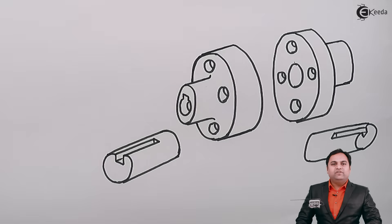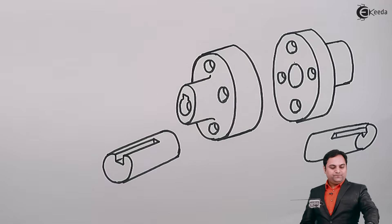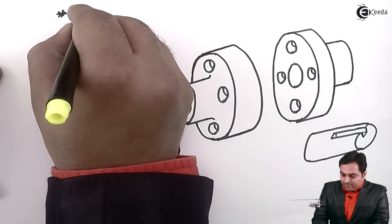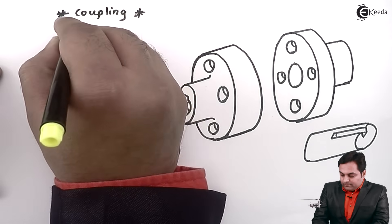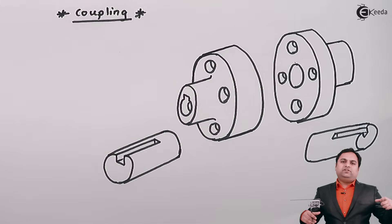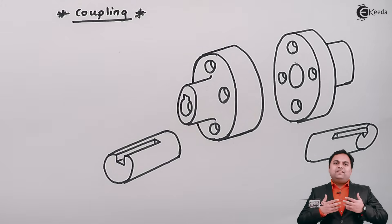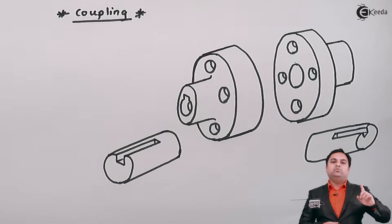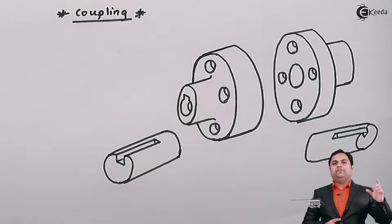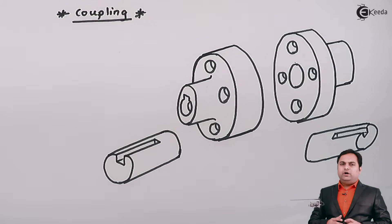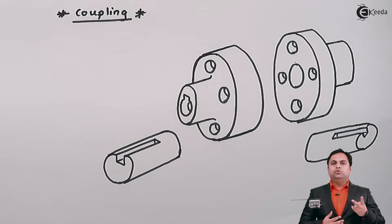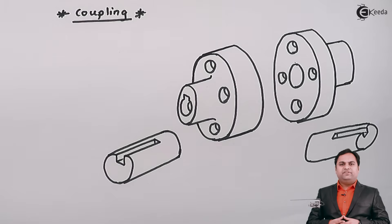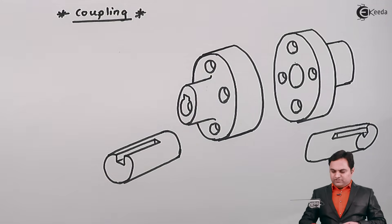In this video we will see the definition of coupling and its functions. A shaft is a rotating member, and when the length of the shaft is long it is difficult to transport in one single piece. So instead of making a complete length of shaft, we divide it into two halves and connect those two halves using a device called a coupling.